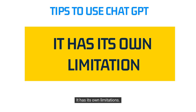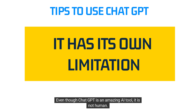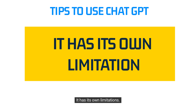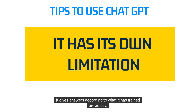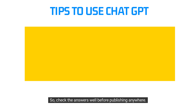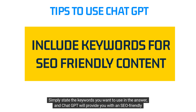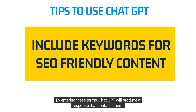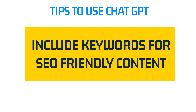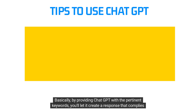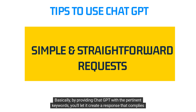Third, it has its own limitations. Even though ChatGPT is an amazing AI tool, it is not human. It has its own limitations, so sometimes the answers it provides can be false — it gives answers according to what it has been trained on previously. So try to understand the limitations in accuracy and check the answers well before publishing anywhere. Fourth, include keywords to get SEO-friendly answers. Simply state the keywords you want to use in the answer, and ChatGPT will provide you with an SEO-friendly response. By entering these terms, ChatGPT will produce a response that contains them, creating content that complies with your SEO needs.